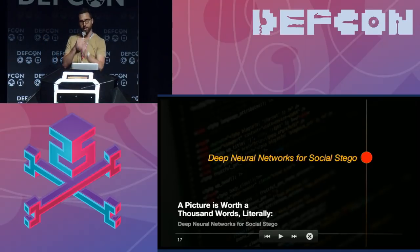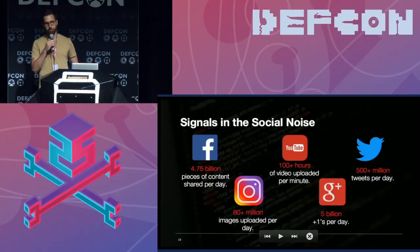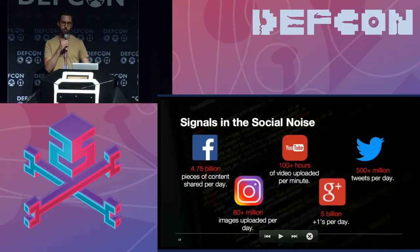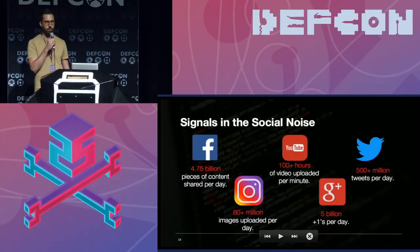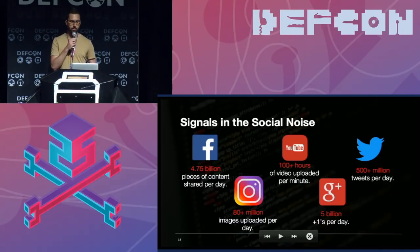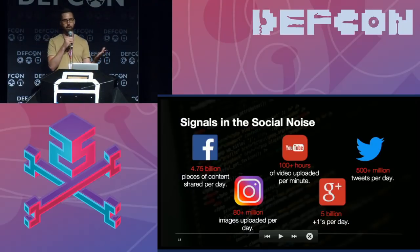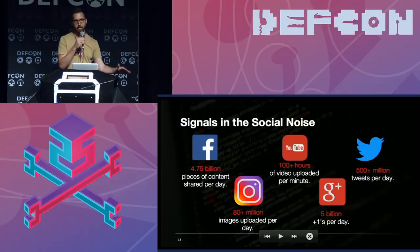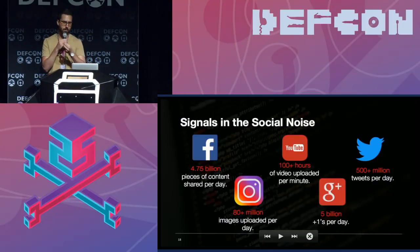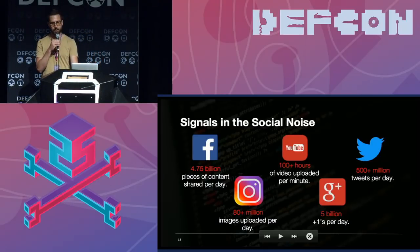Why are social networks such nice conduits for steganography? They're massive. There's so much content being poured across social networks on a second-by-second basis — almost 5 billion pieces of Facebook content shared per day, hundreds of hours of YouTube shared per minute, 500 million tweets per day. The idea is that there's so much content that it should be fairly trivial to hide some piece of data in that huge stream, and even though it's public, have a recipient be able to take that data from the sender, decode it and understand it while everyone else doesn't.